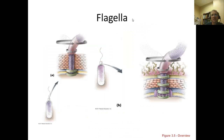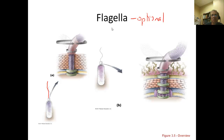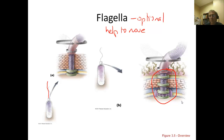The flagella is another optional structure found on some prokaryotic cells but not others. It extends off the surface of a prokaryotic cell, and in all cases its role is to help the cell move. The textbook goes into detail about the various parts of the typical prokaryotic flagella, but the important take-home message is that the bulk of the flagella is made up of a single protein called flagellin — pretty easy to remember.